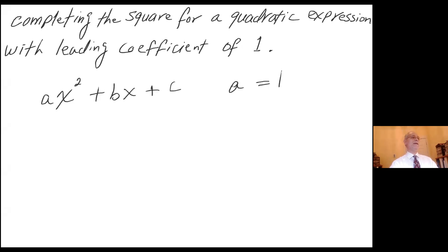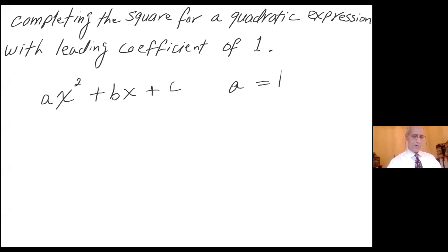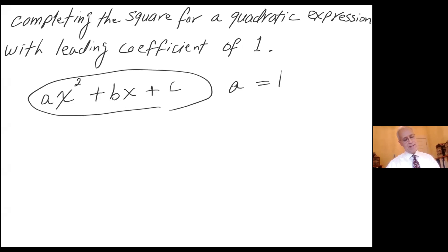Hello, Math 98. Completing the square for a quadratic expression with a leading coefficient of one. So the form that we are working with is ax squared plus bx plus c, such that the value of a equals 1.